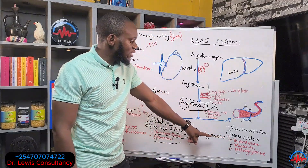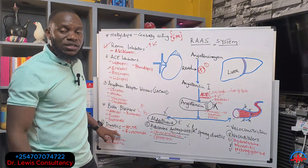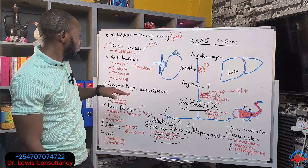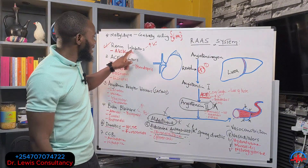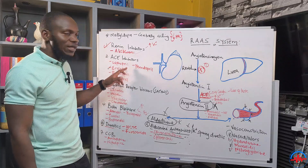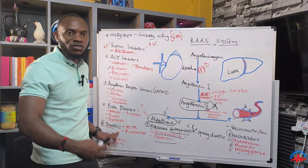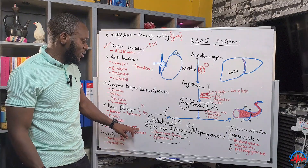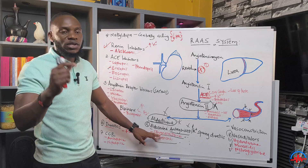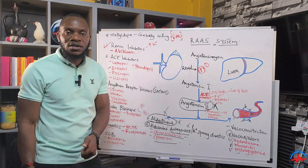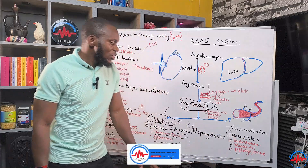So the classification summary: vasodilators; aldosterone receptor blockers — also under diuretics; calcium channel blockers; beta blockers; angiotensin receptor blockers — the sartans; ACE inhibitors; and renin inhibitors. Under renin inhibitors: aliskiren. Under ACE inhibitors: the '-pril' drugs. Under sartans: losartan and others. Under beta blockers: the '-lol' drugs. Under diuretics: furosemide/Lasix, HCTZ/hydrochlorothiazide, and spironolactone/aldactone. Under calcium channel blockers: nifedipine/Adalat and amlodipine.